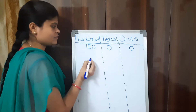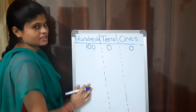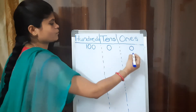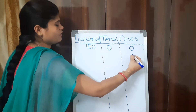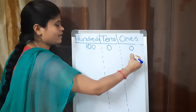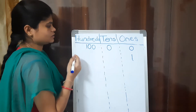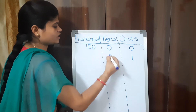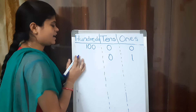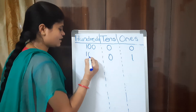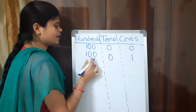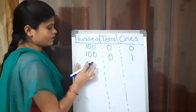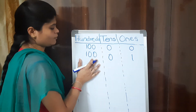The next number is 101. How many 1s does 101 have? One 1. How many 10s? Zero 10s. How many 100s? One hundred. This is how we write 101 in place values. What is the number name of 101?